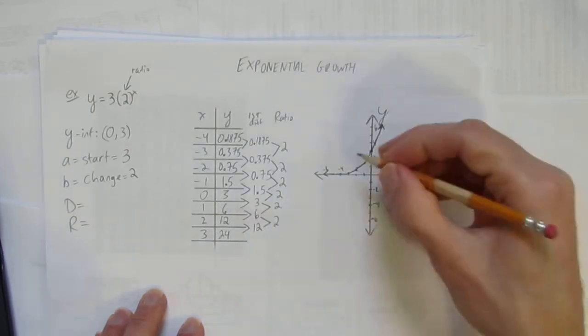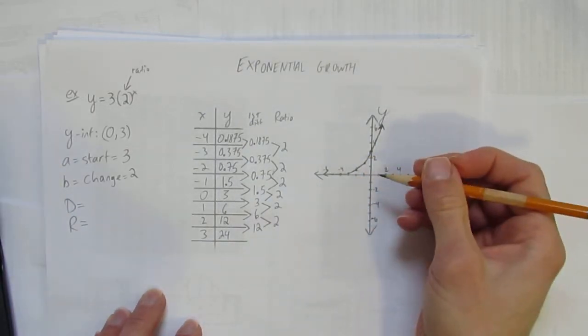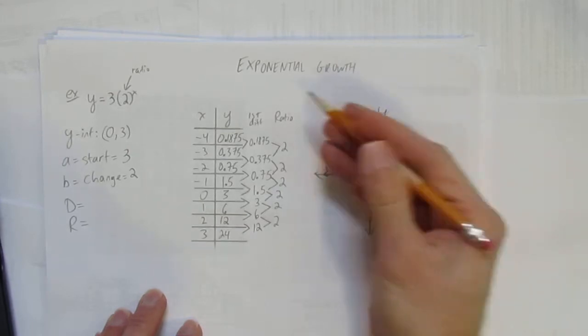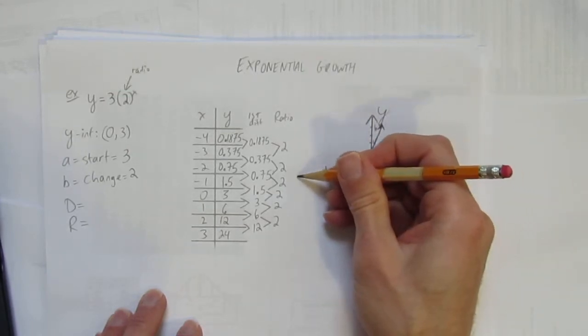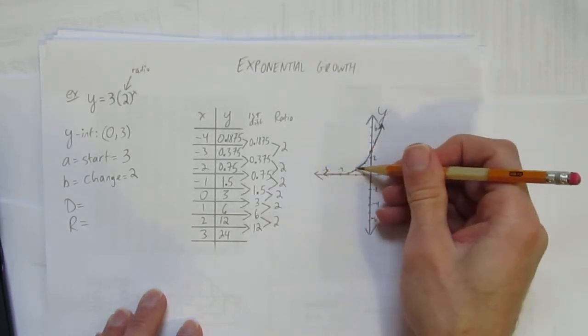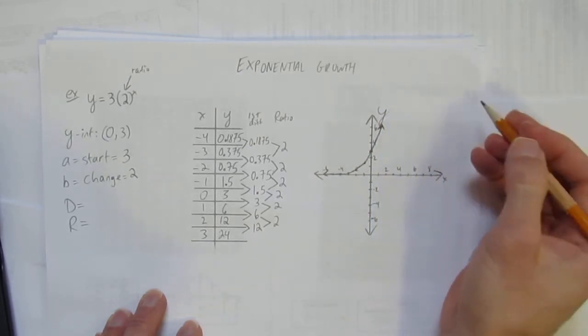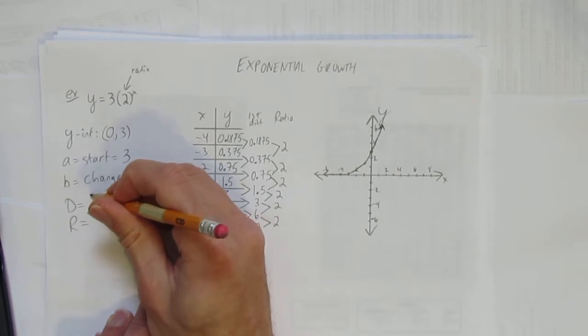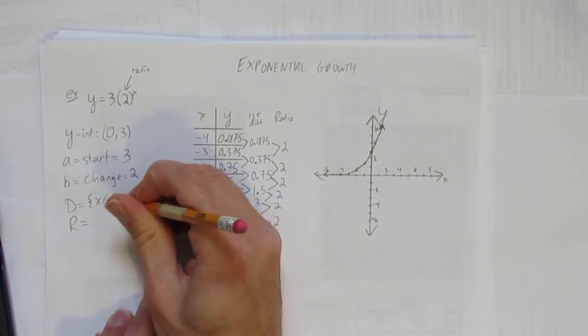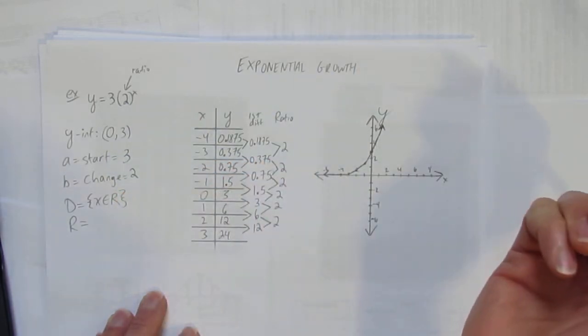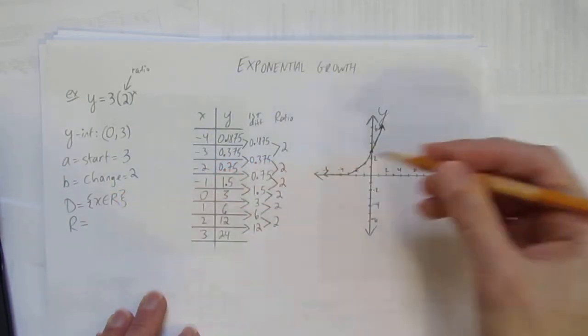And so now that I've got the graph I can state the domain. Here's what I always ask for these kind of graphs with exponentials: Does it ever stop going left? No. Does it ever stop going right? No, it's going to get super steep, but it's always going to go right for infinity. So what's the domain? The domain is the set of x is an element of the real numbers. That's the whole story.